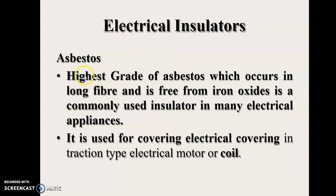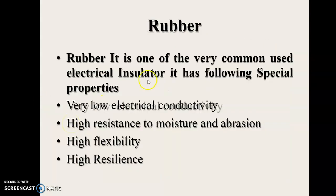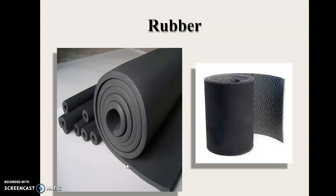Asbestos of the highest grade, which occurs in long fiber and is free from iron oxide, is commonly used as an insulator in many electrical appliances and as coverings for electrical wiring. Rubber is also one of the very commonly used electrical insulators; it has special properties like very low electrical conductivity, high resistance to moisture and abrasion, high flexibility and high resilience.